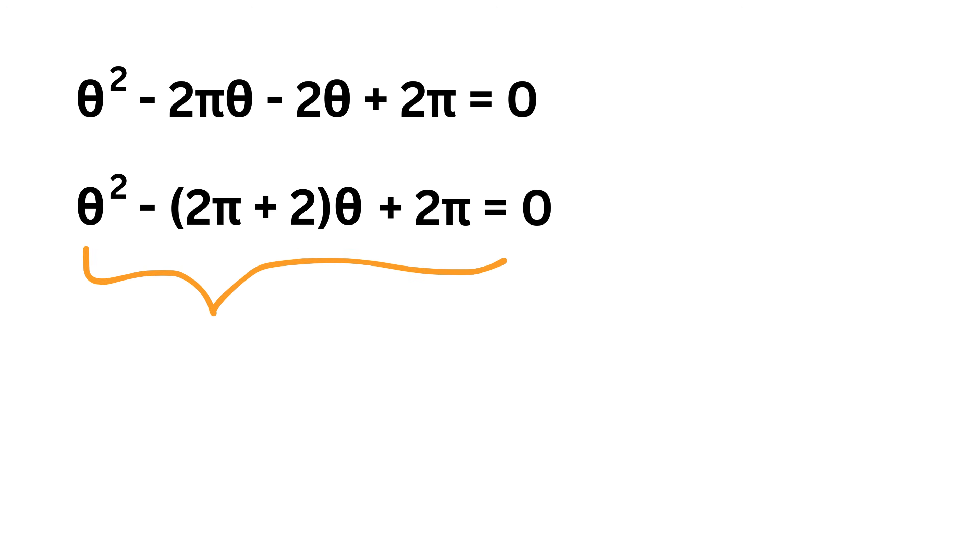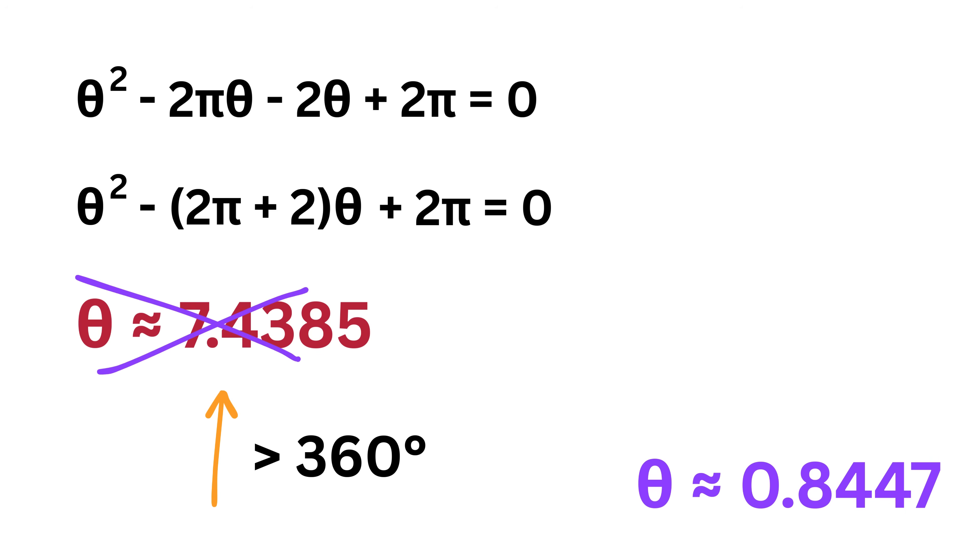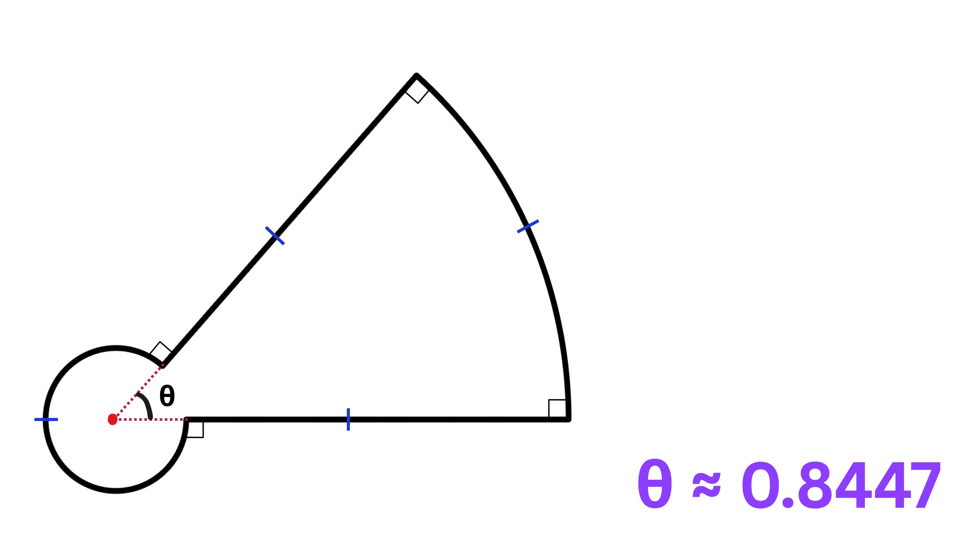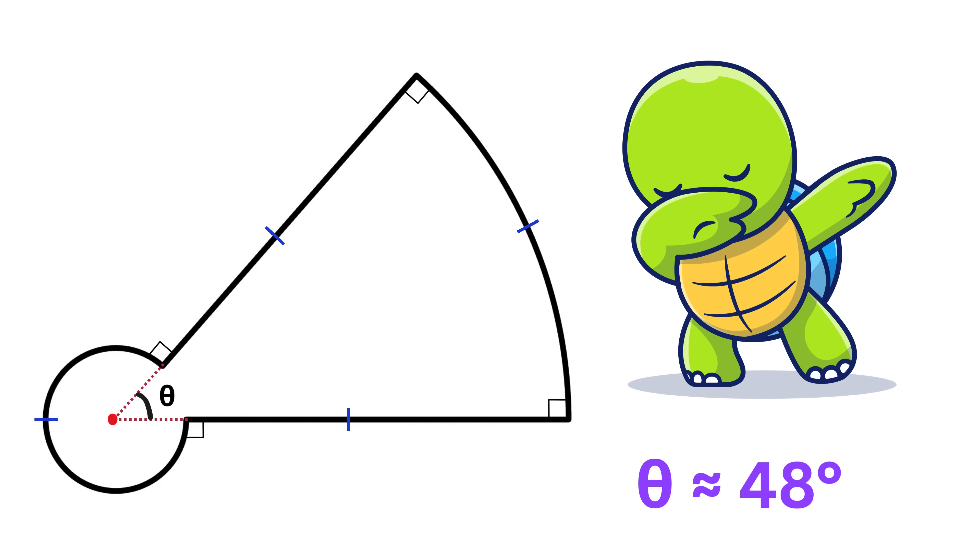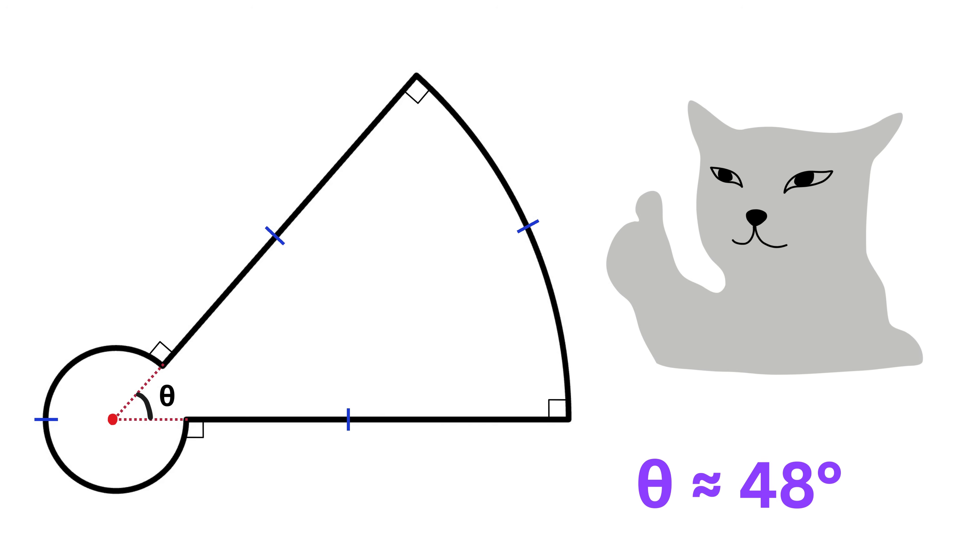This is a quadratic equation in theta and I will not bore you solving this. We get theta as nearly 7.4385 and 0.8447. Now 7.4 radians is more than 300 degrees which is way too big for the angle drawn between those two lines. It clearly looks like a small acute angle in the figure. So the only value that matches the geometry is 0.8447 radians which is about 48 degrees. Isn't this problem super duper cool? So good!